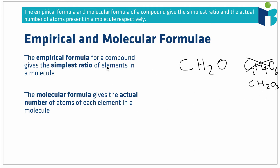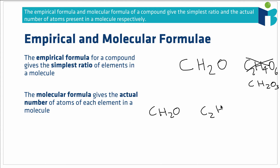The molecular formula is slightly different from the empirical formula in that it gives you the actual number of atoms of each element in a molecule. One of the problems with the empirical formula is that it could correspond to a number of different molecules — for example, a molecule actually made of one carbon atom, two hydrogen atoms, and one oxygen atom bonded together.